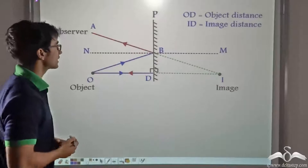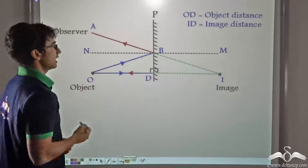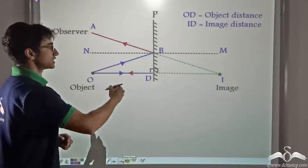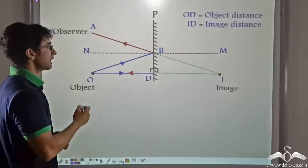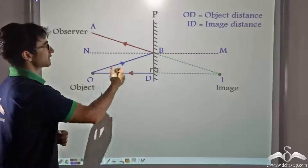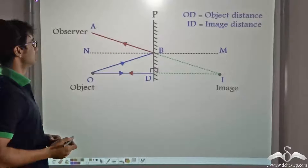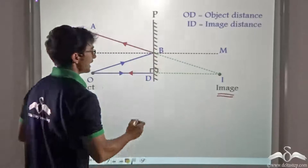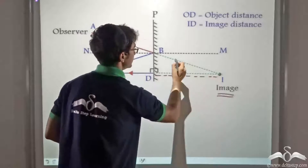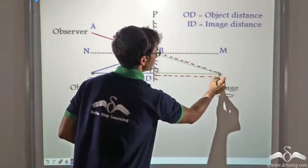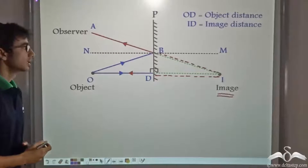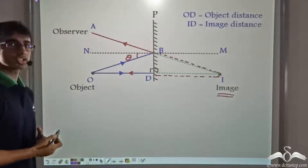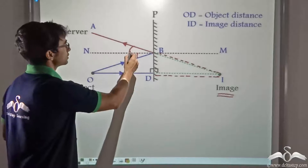The two rays we are considering are OD and OB. OD is the incident ray which after reflection retraces its path, and OB is an incident ray which after reflection travels as BA. The observer is placed at A. In order to obtain the image, we extrapolate these two rays to get the image I. Now we consider the angle of incidence to be theta, so according to the laws of reflection, the angle of reflection will also be theta.